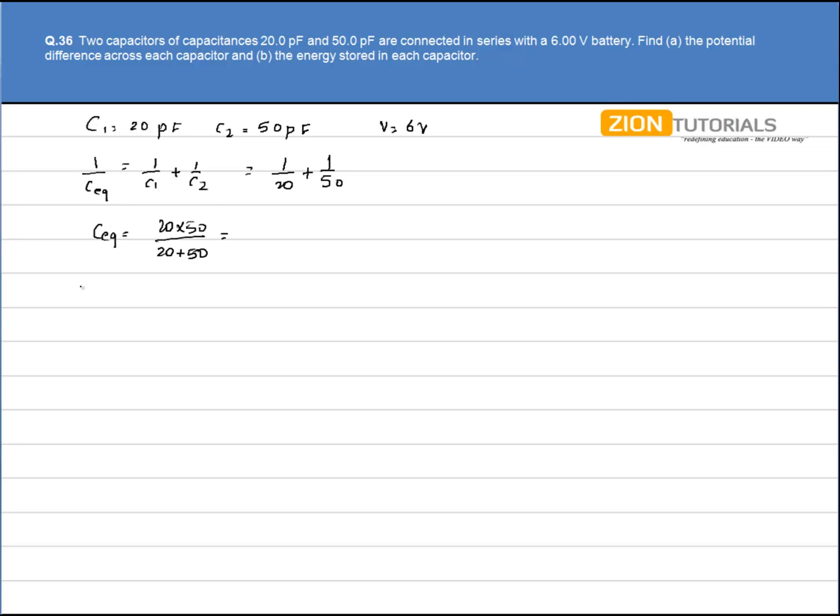Now we know that Q equals CV. We have to calculate the charge on each capacitor. The charge on each capacitor will be the capacitance, 20 into 50 divided by 20 plus 50, times the potential which is 6V. This is the charge on each capacitor.